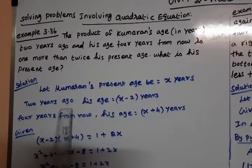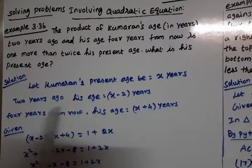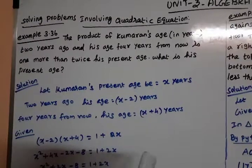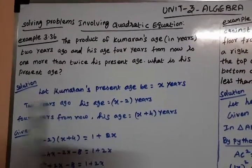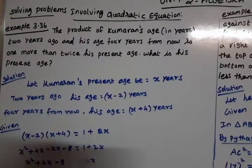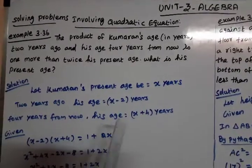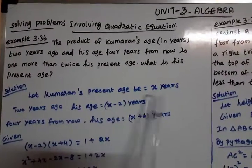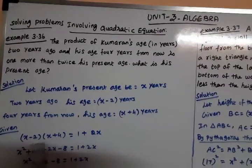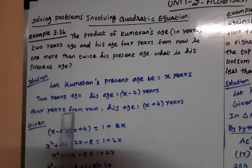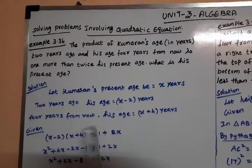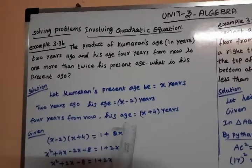Two years ago — now, if the present age is X, then two years ago you subtract 2, so it is X minus 2. And four years from now, you add 4, so the age is X plus 4.